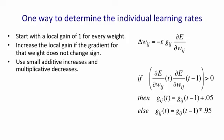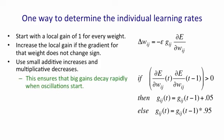then when you take their product, it'll be positive, because you'll either get two negative gradients or two positive gradients. And then what we're going to do is increase Gij by a small additive amount. If the gradients have opposite signs, we're going to decrease Gij, and because we want to damp down Gij quickly if it's already big, we're going to decrease it multiplicatively. That ensures that big gains will decay very rapidly if oscillations start.